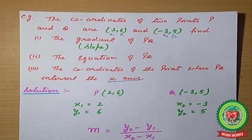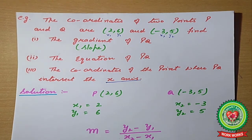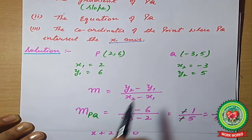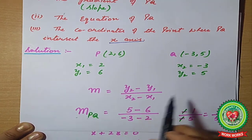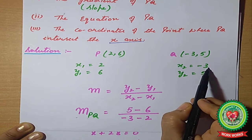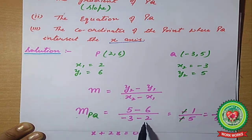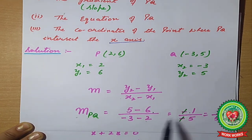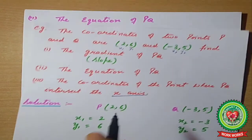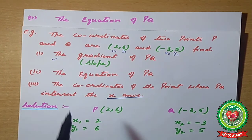According to the solution, we proceed step by step. First, find the slope using m = (y₂ − y₁) / (x₂ − x₁) = (5 − 6) / (−3 − 2) = −1 / −5 = 1/5. The slope of PQ is 1/5.